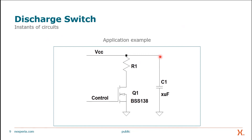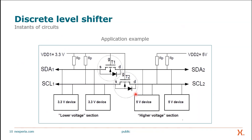Another example is a discharge switch, where a small signal MOSFET is used to discharge the capacitor on the output to give a defined low signal at the output. There are also discrete level shifters. In today's circuitry, you often have different voltage domains — in our example, a 3.3 V and a 5 V domain. You use small signal MOSFETs to adapt the output signals from the 3.3 V domain to the level required for the 5 V domain, and it also works vice versa.